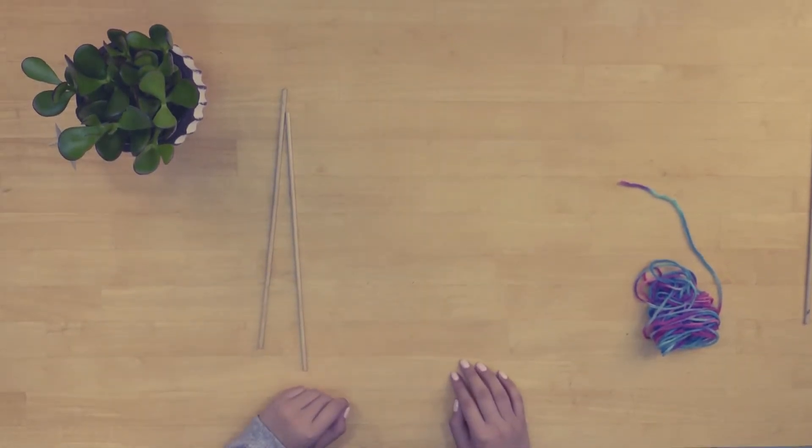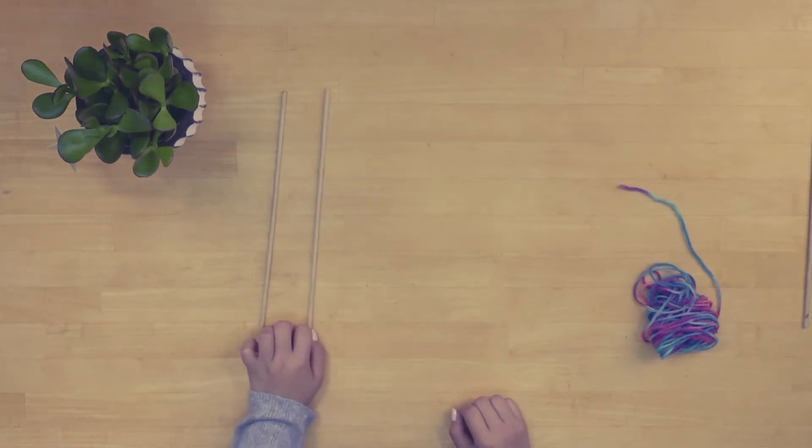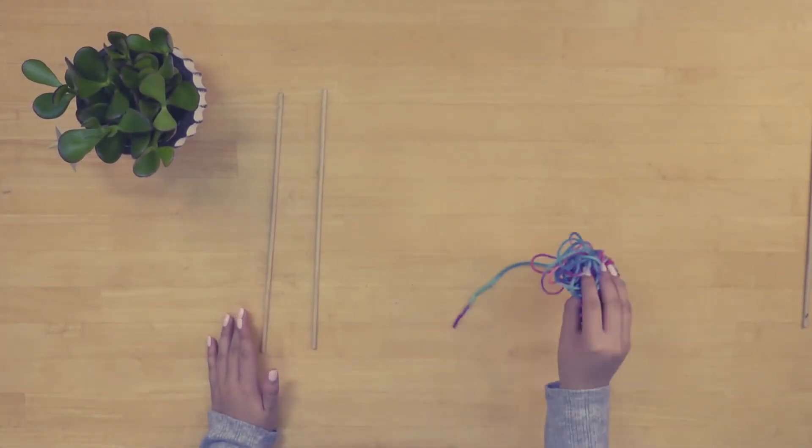So with your art kit, we will be making yarn stars. In order to make them, you will need some colorful yarn and two wooden dowels.